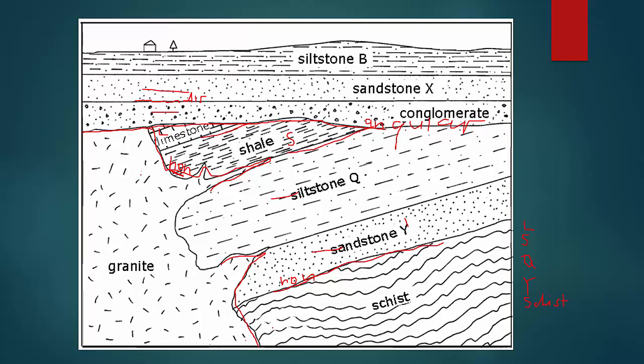But look, this igneous intrusion, the granite, came through all these layers. So, therefore, it had to be after the limestone. So, the granite comes after this, and I will call it G. And then, we have this unconformity, which, remember, is an angular. But if you look at right here, between the granite and this conglomerate, it is a nonconformity. But between this shale and conglomerate, it's angular unconformity.